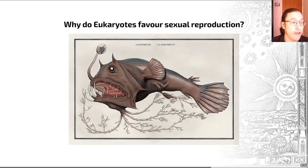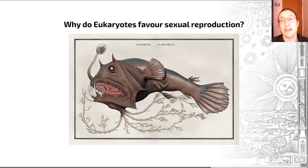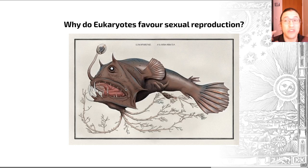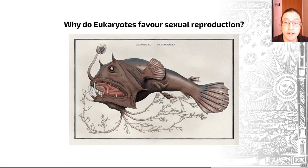An example of the real consequences of this two-fold cost is the anglerfish. They live in the deep, dark ocean — you may have seen them briefly in Finding Nemo. They have a really interesting life cycle. Because a male needs to find a female relatively quickly in the deep, dark ocean where the sexes are spread far apart, when the male does manage to find a female, the male and the female fuse. The male becomes dependent on the female host for survival, receiving nutrients via a shared circulatory system and providing sperm to the female in return. This is a great example of a life cycle that's had to adapt to the costs of sexual reproduction within the deep ocean environment.